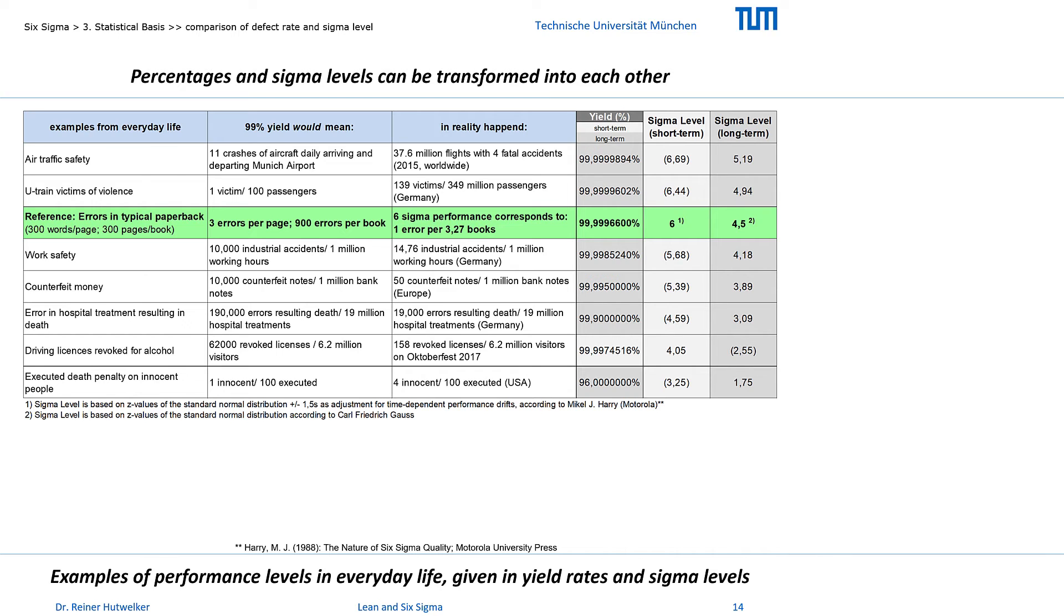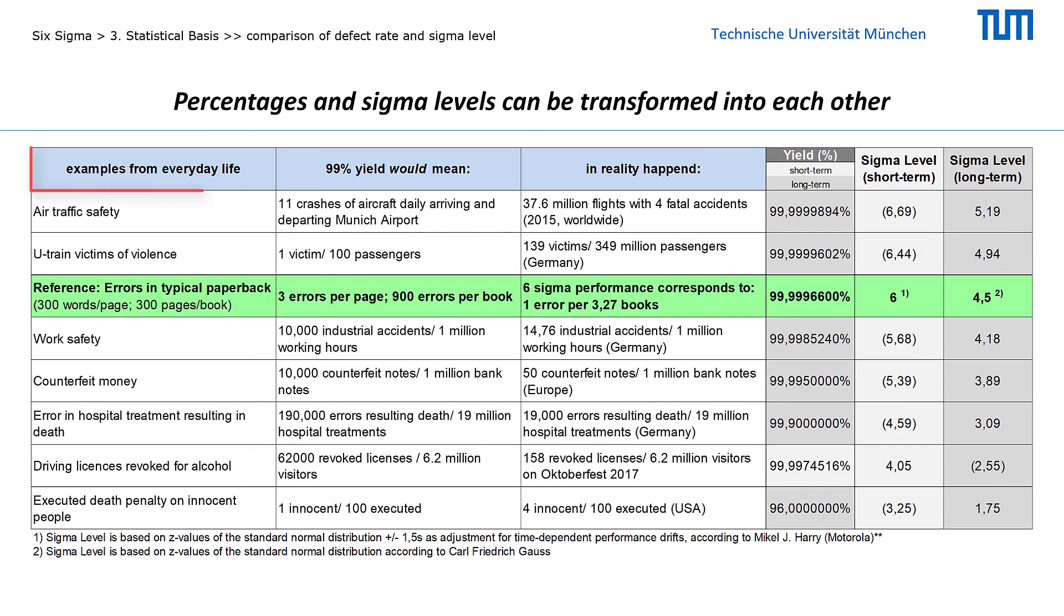Nevertheless, I would additionally like to briefly explain the difference between short-term and long-term sigma using these examples. Each example shows what a yield of 99% would mean. I also documented from different sources what actually happens in reality. Here you can compare the actual yields in percent and the corresponding sigma values for long-term and short-term observations respectively.